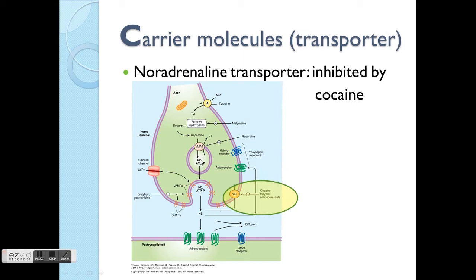NE here refers to norepinephrine, which is another name with similar meaning to noradrenaline. At the end of this nerve terminal, we have a storage vesicle for NE, ATP, and phosphates. Upon activation, it causes the release of these contents into the synaptic cleft.